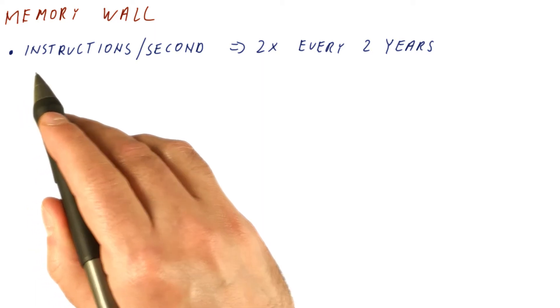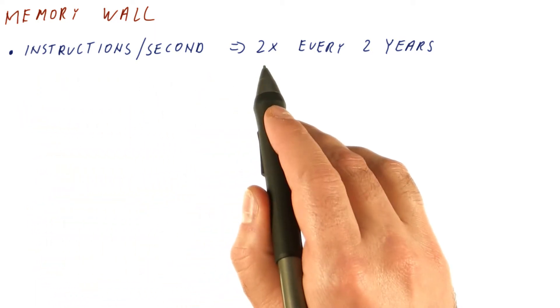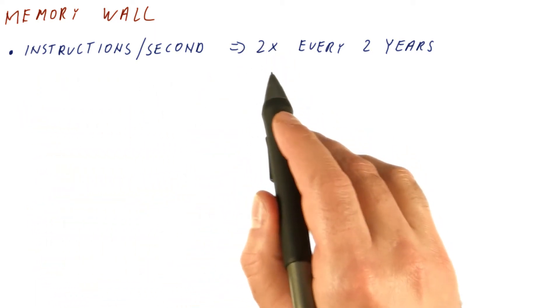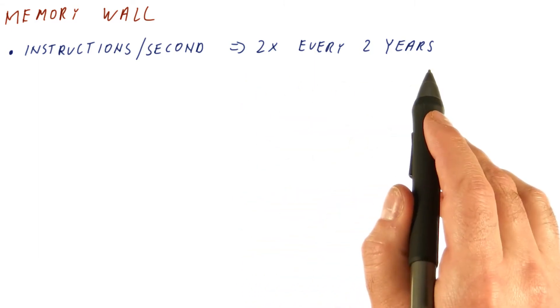The processor speed, in terms of instructions per second, we have already said it can be expected to roughly double every, let's say, two years.